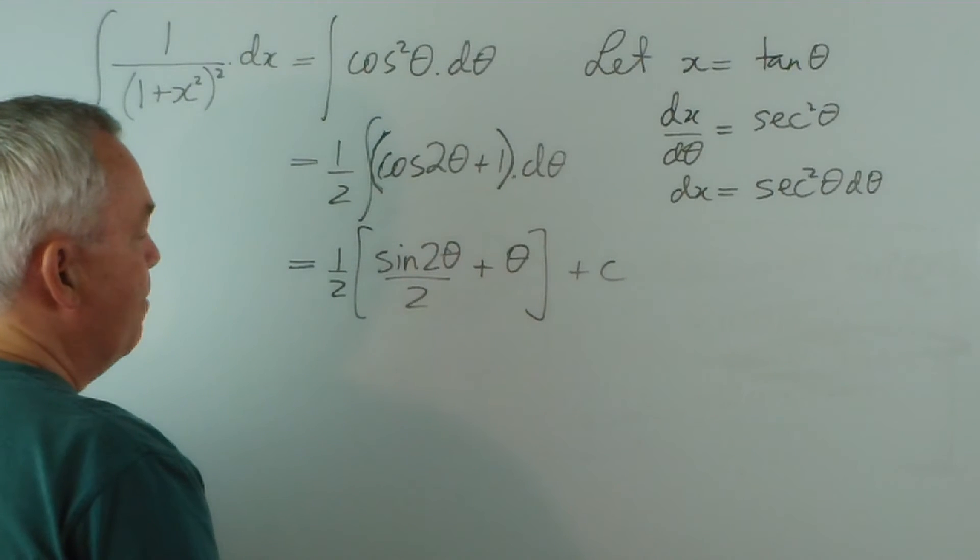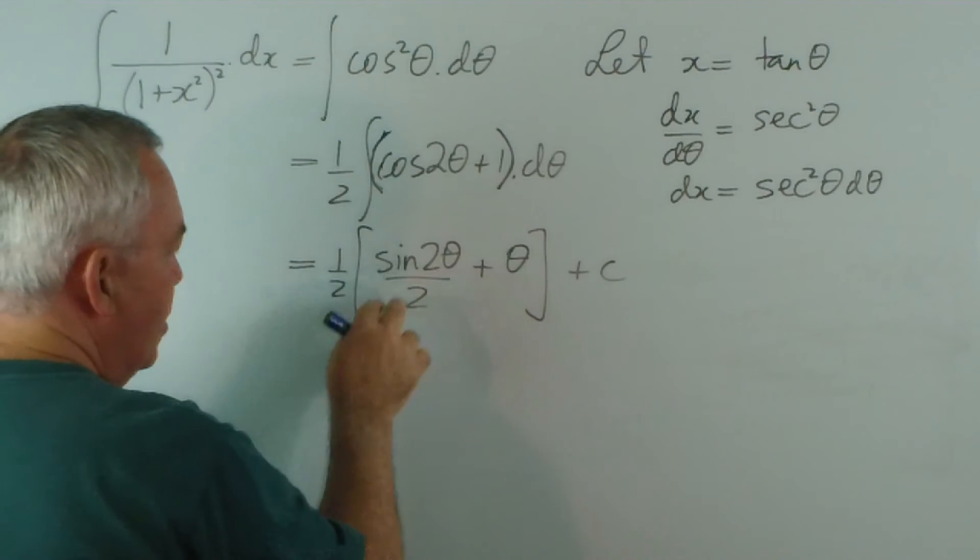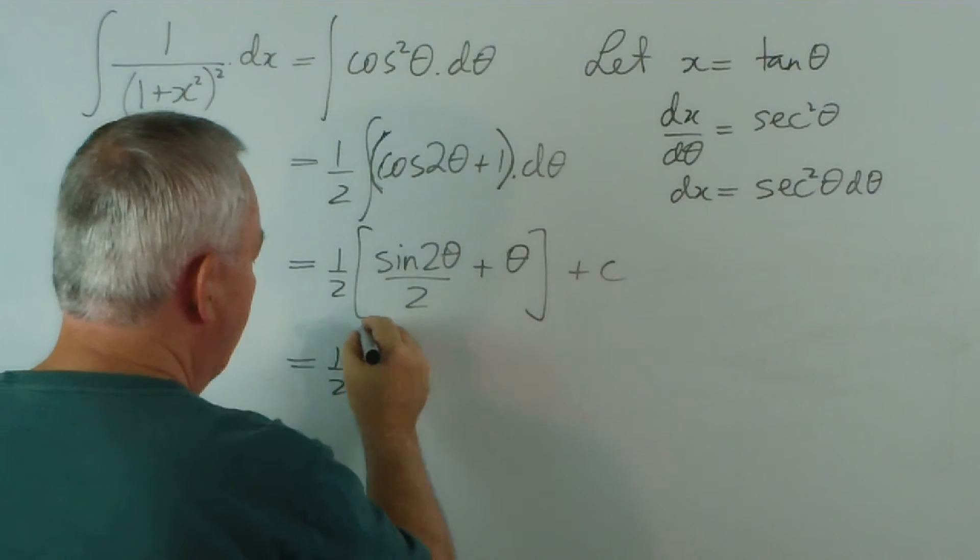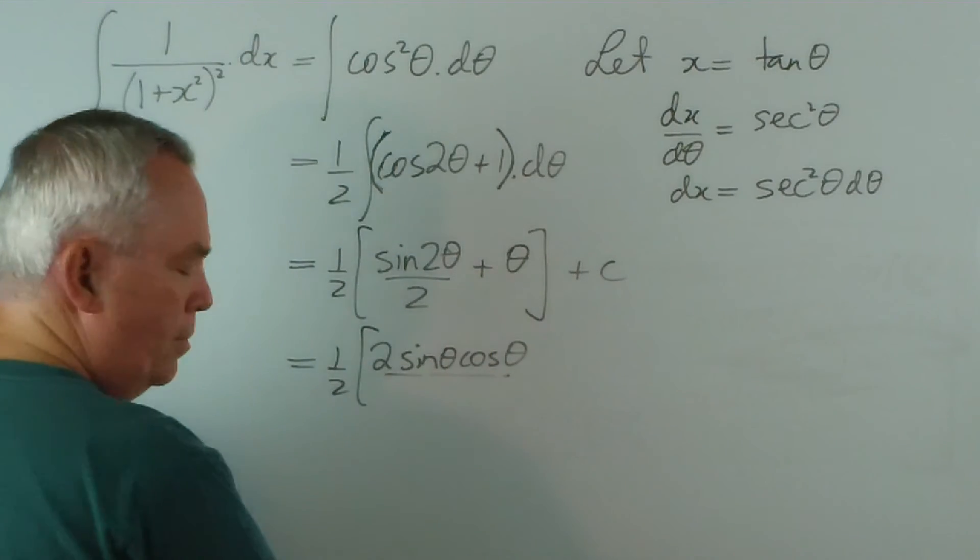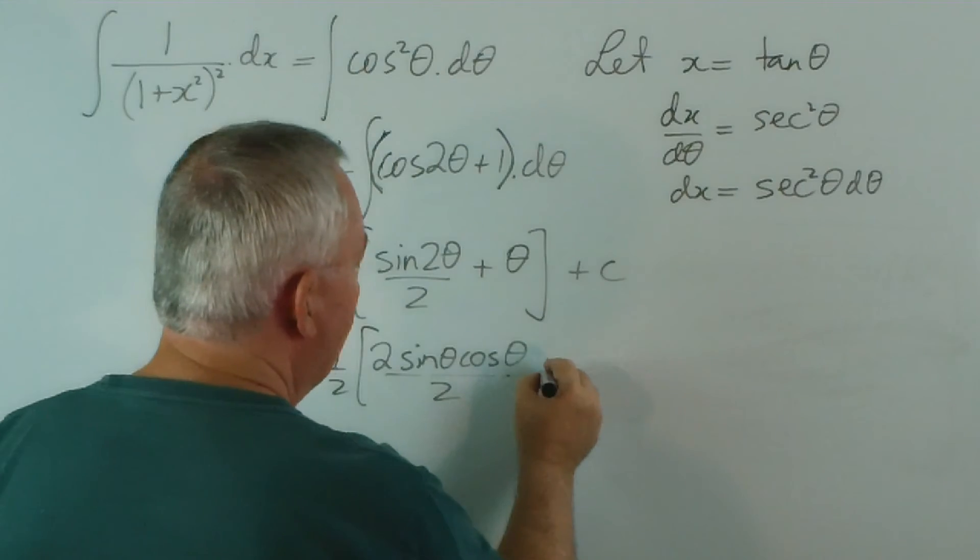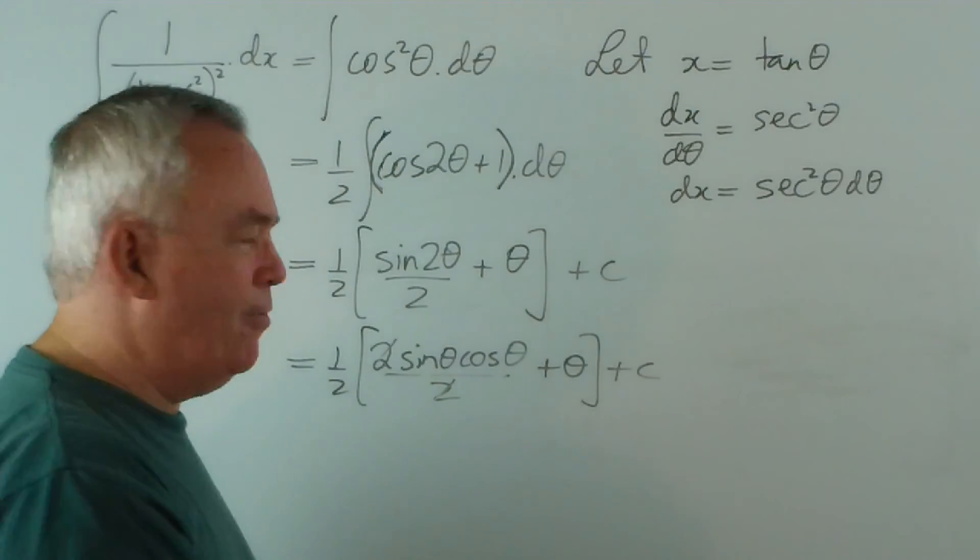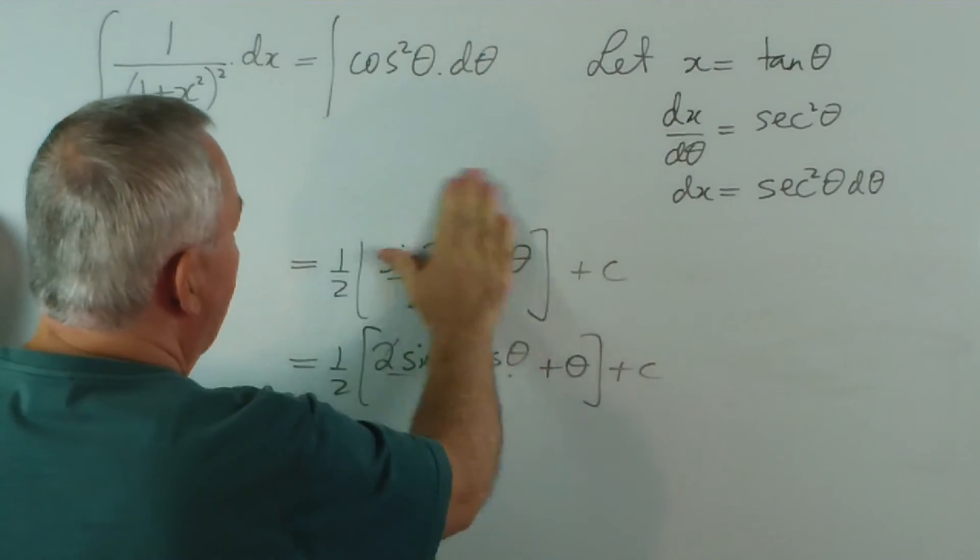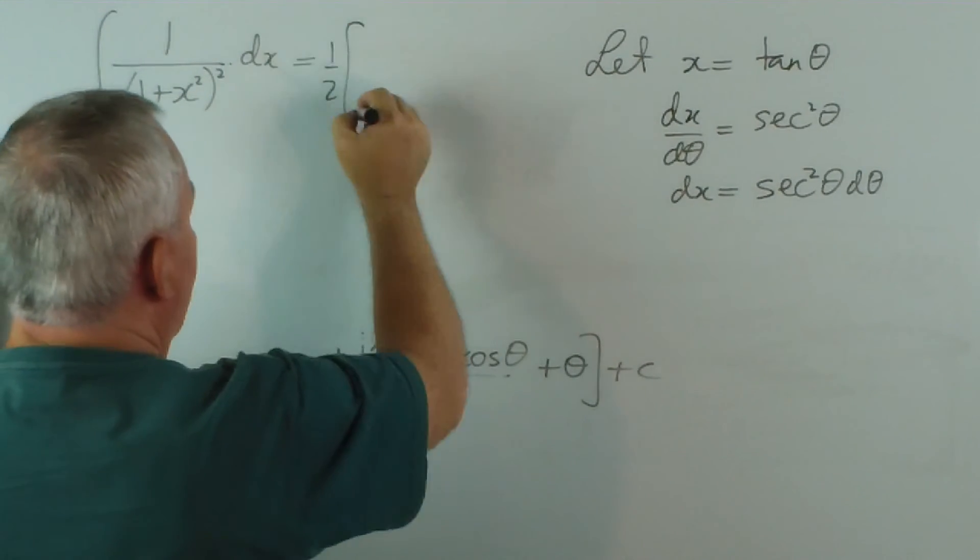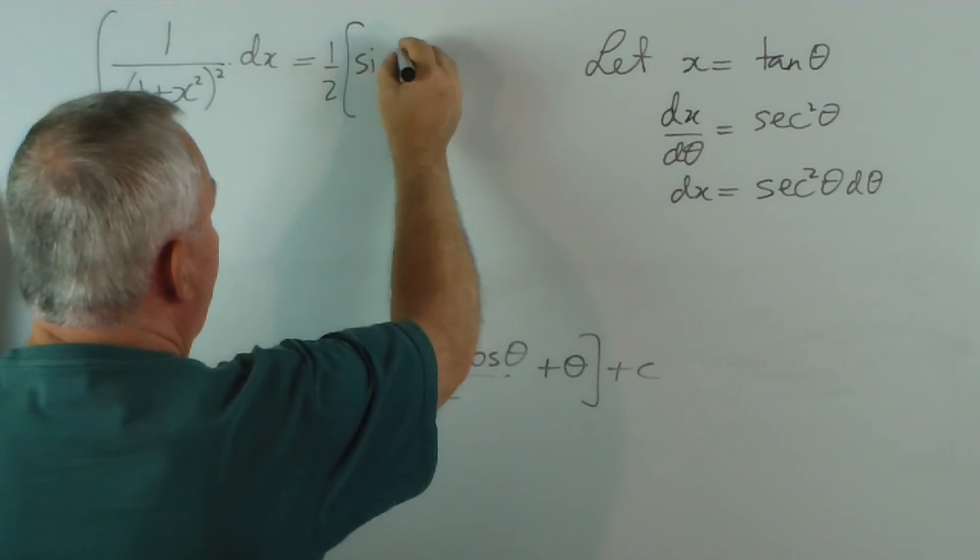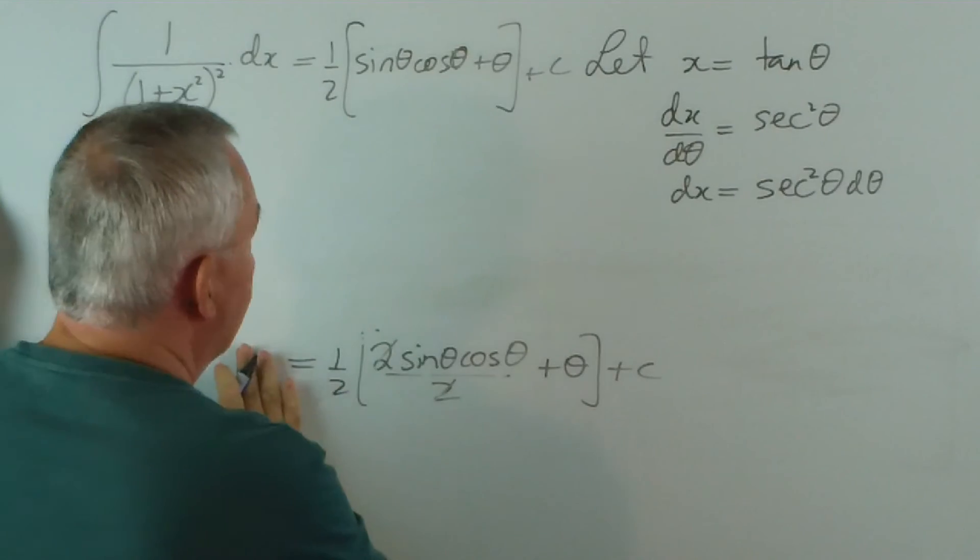Now all that remains is to convert this back to x. But here we have a double angle, so I'm going to use our expansion of sin 2θ, which is 2 sin θ cos θ, to reduce this to two single angle trig functions. And the 2s will divide out. And then comes the last phase. So we now have 1/2 outside of, the 2s have divided out, so it's sin θ cos θ + θ + c.